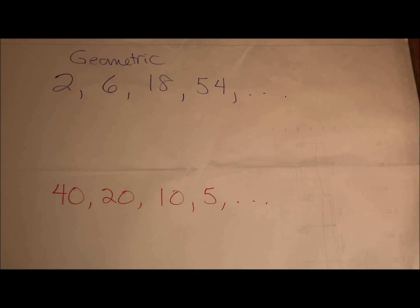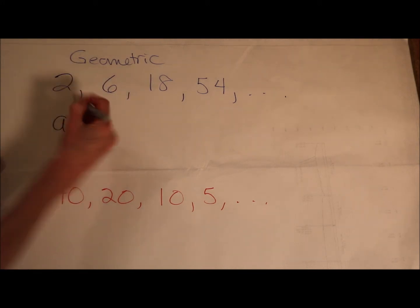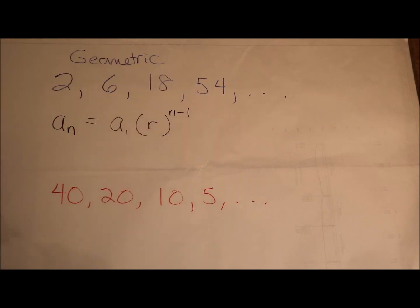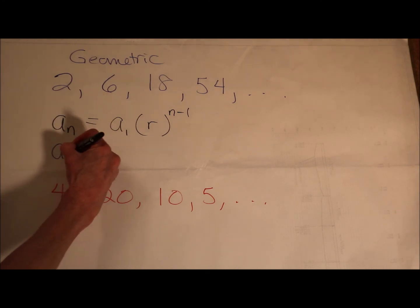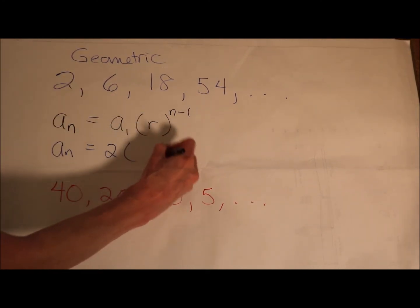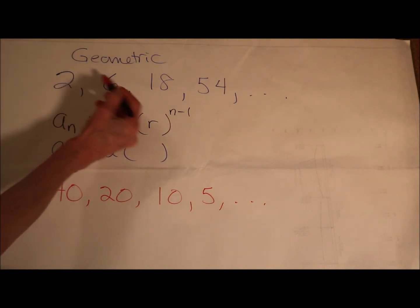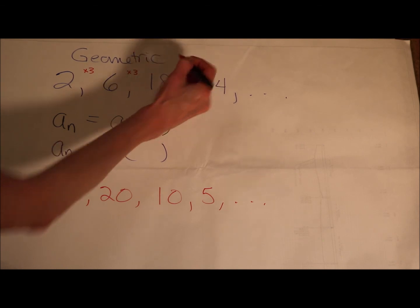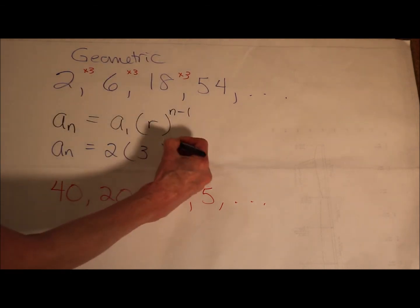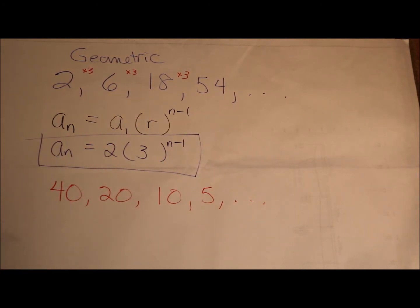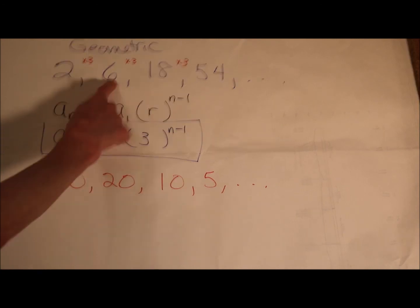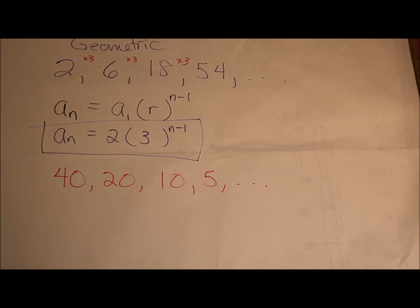Here are two geometric sequences — let's write an explicit equation for them. Our general form is: the nth term equals the first term times the common ratio to the n minus 1. First term: 2. Common ratio — 2 times what is 6? 6 times what is 18? It's 3, times 3, times 3. So our common ratio is 3, giving us 2 times 3 to the n minus 1. Plugging in 1 gives 2, plugging in 2 gives 6, plugging in 3 gives 18, and so on.